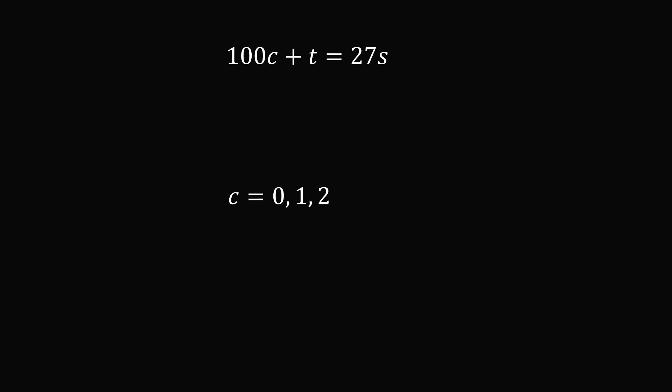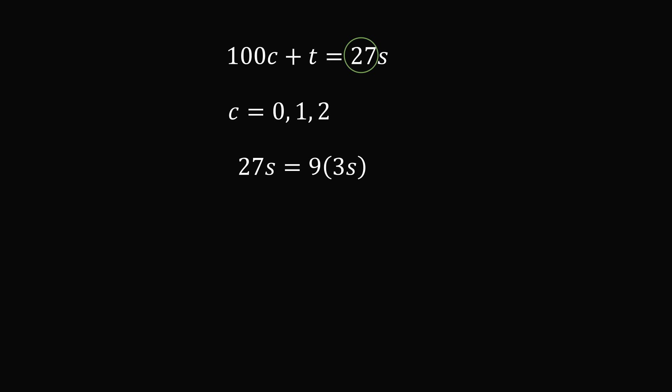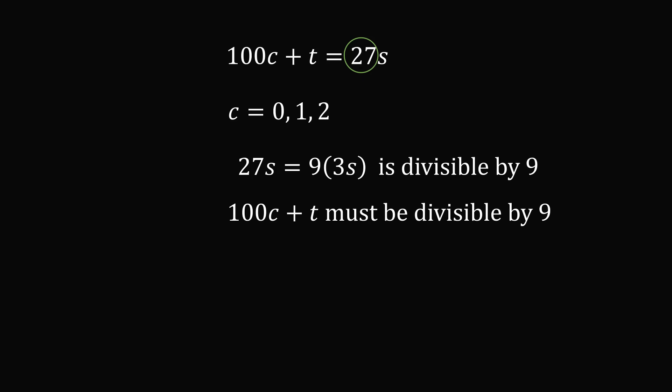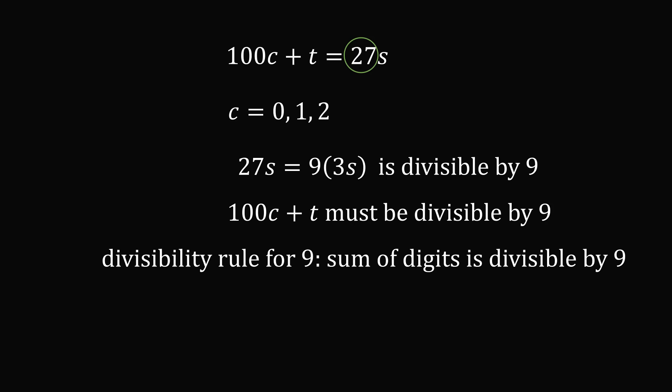Which of these values can actually result in a solution? We know 100C plus T equals 27S. Since 27 equals 9 times 3, 27S is a multiple of 9 — that is, divisible by 9. So the left-hand side, 100C plus T, must also be divisible by 9. By the divisibility rule for 9, the sum of the digits must be divisible by 9. The sum of digits of 100C plus T is C plus T, so C plus T must be divisible by 9.